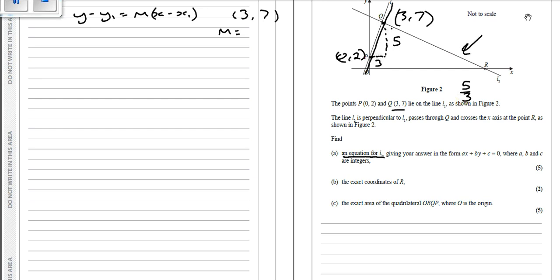So therefore, the perpendicular gradient, you need to flip this upside down. You also need to change the sign, so it's going to be minus 3 over 5. So now, we've got our equation, y minus y1. We've got our gradient, which is minus 3 fifths, and we've got our coordinate. So we just substitute it in. So we've got y minus our y coordinate, which was 7, equals minus 3 fifths times x minus the x coordinate, which was 3.